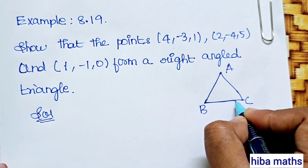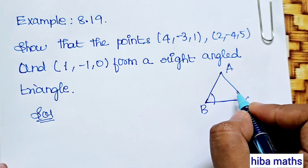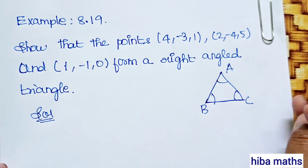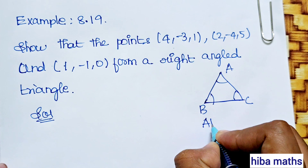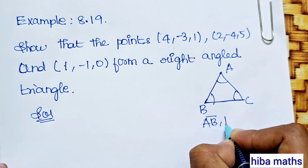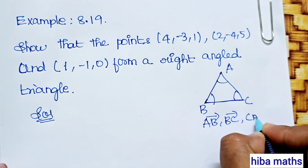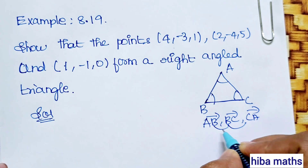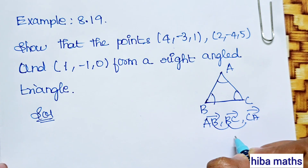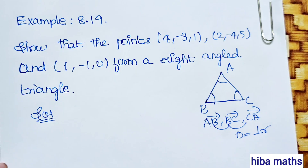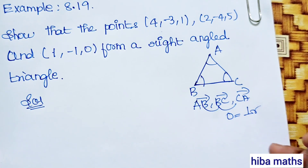To prove a right-angled triangle, we need to show that two vectors among AB, BC, and CA are perpendicular — i.e., their dot product equals 0, which means a 90-degree angle exists between them.